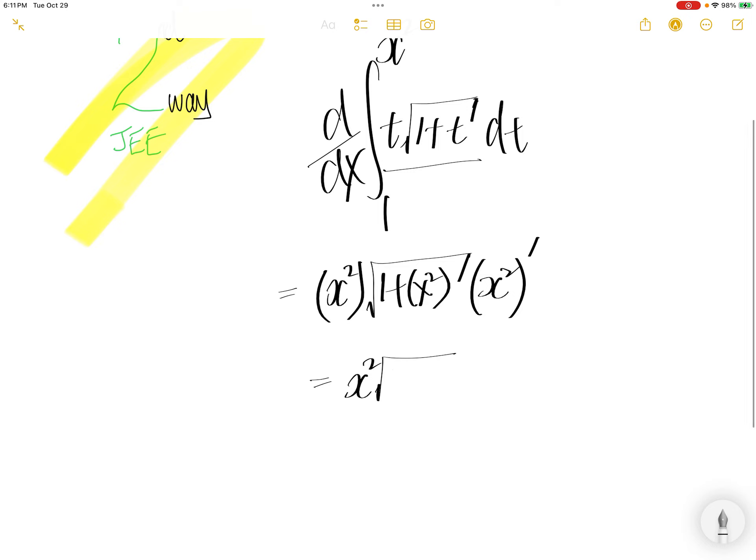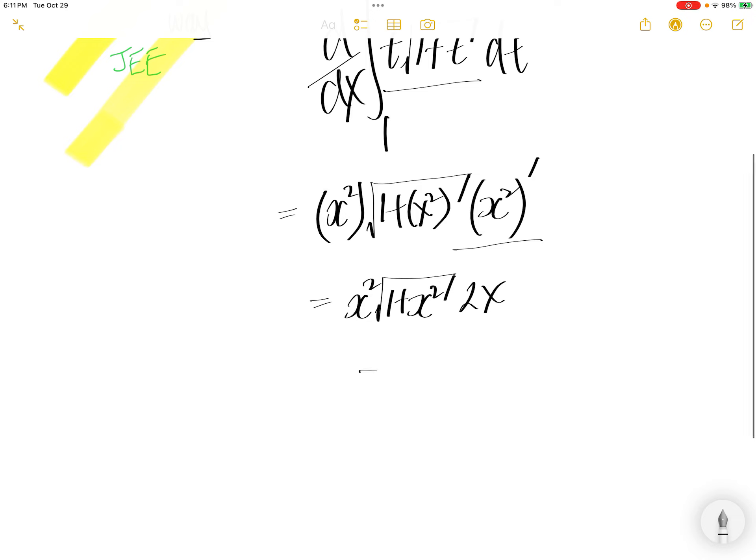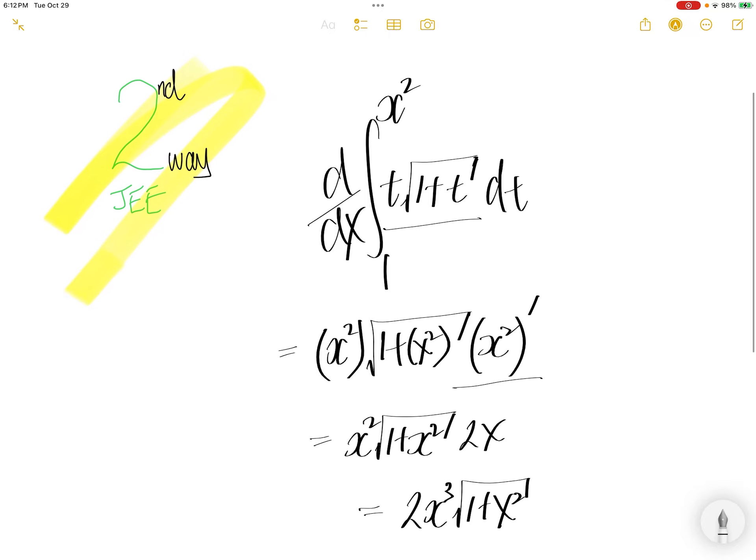This is equal to x squared times square root of 1 plus x squared. The derivative of this is 2x. So this is equal to 2x cubed times square root of 1 plus x squared.